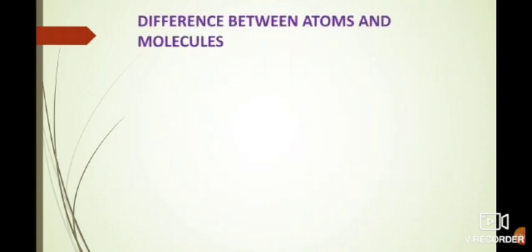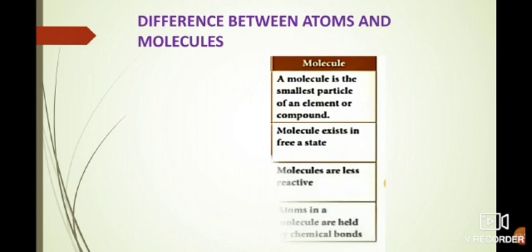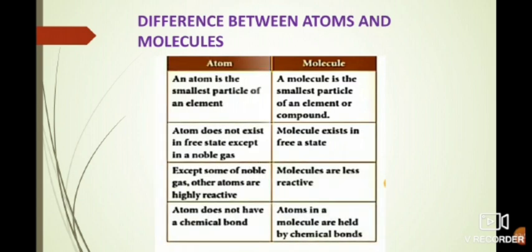Next we learn about the difference between atoms and molecules. We know about atoms and molecules — now let us learn their differentiation. First: atom is the smallest particle of an element, but molecule is the smallest particle of an element or compound.